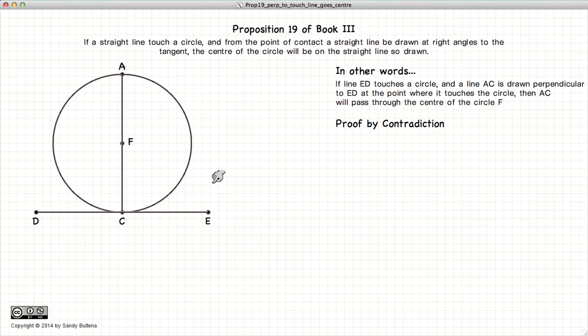Now we're going to prove this by contradiction, which means we're going to assume that if F is the center of the circle, AC does not pass through the point F.